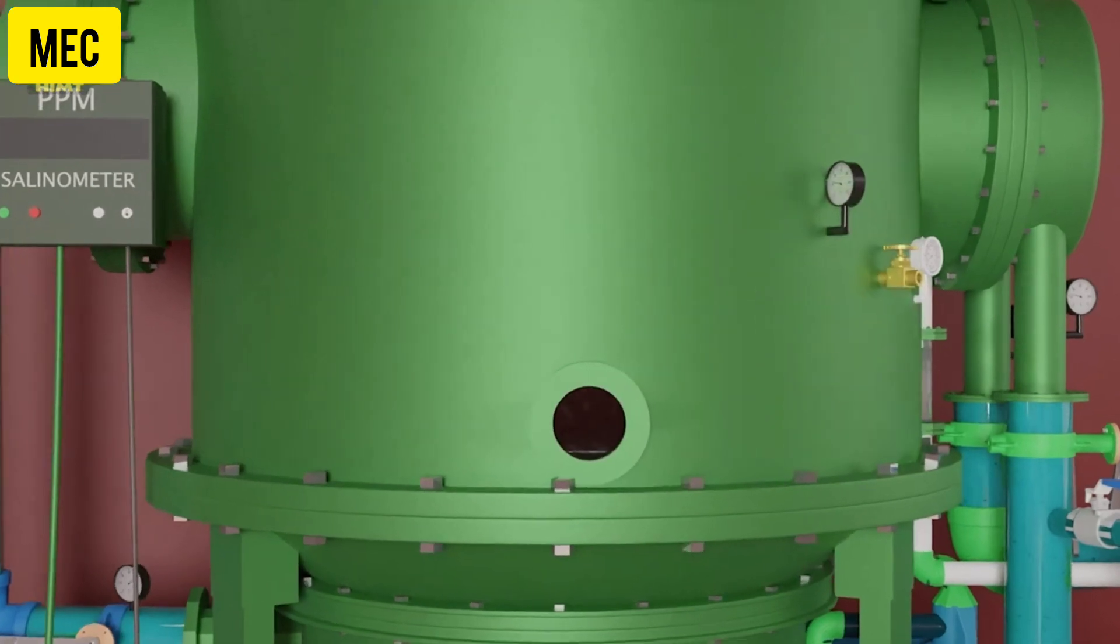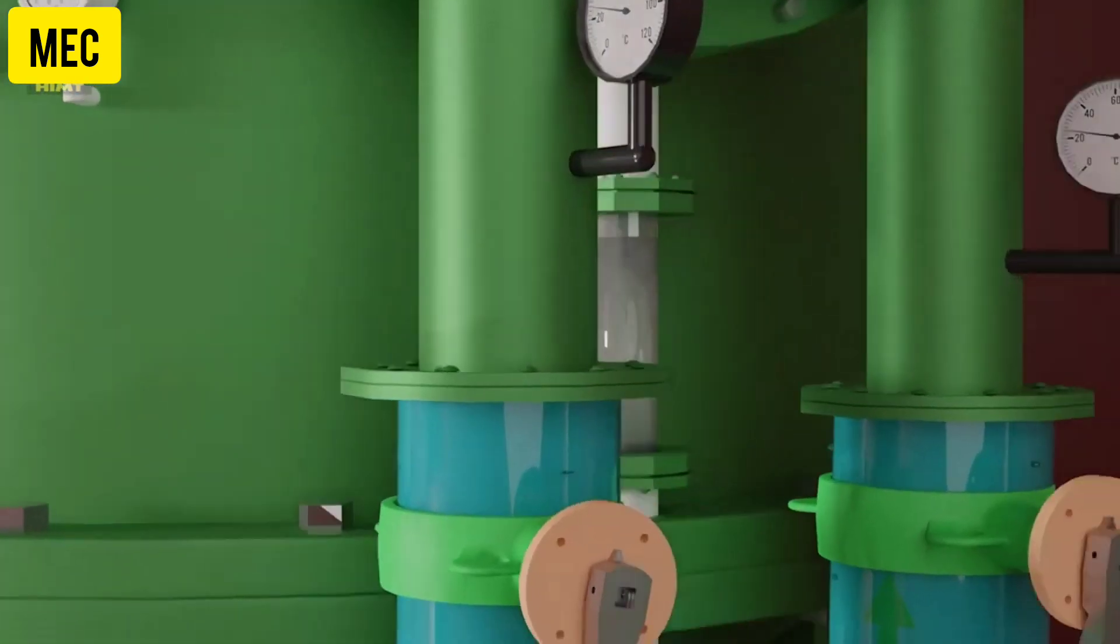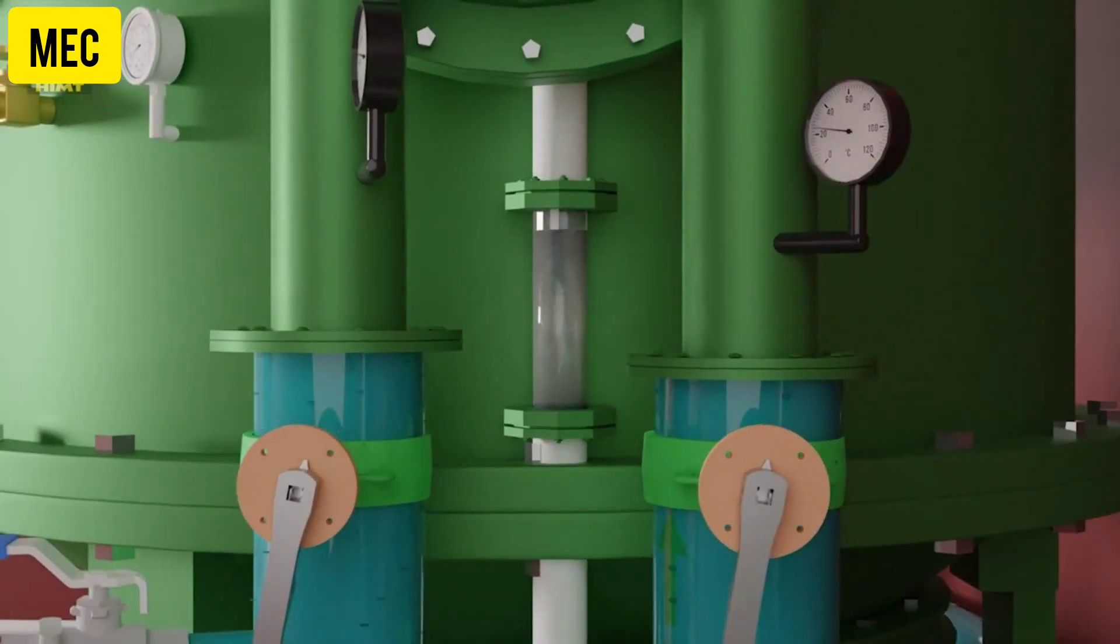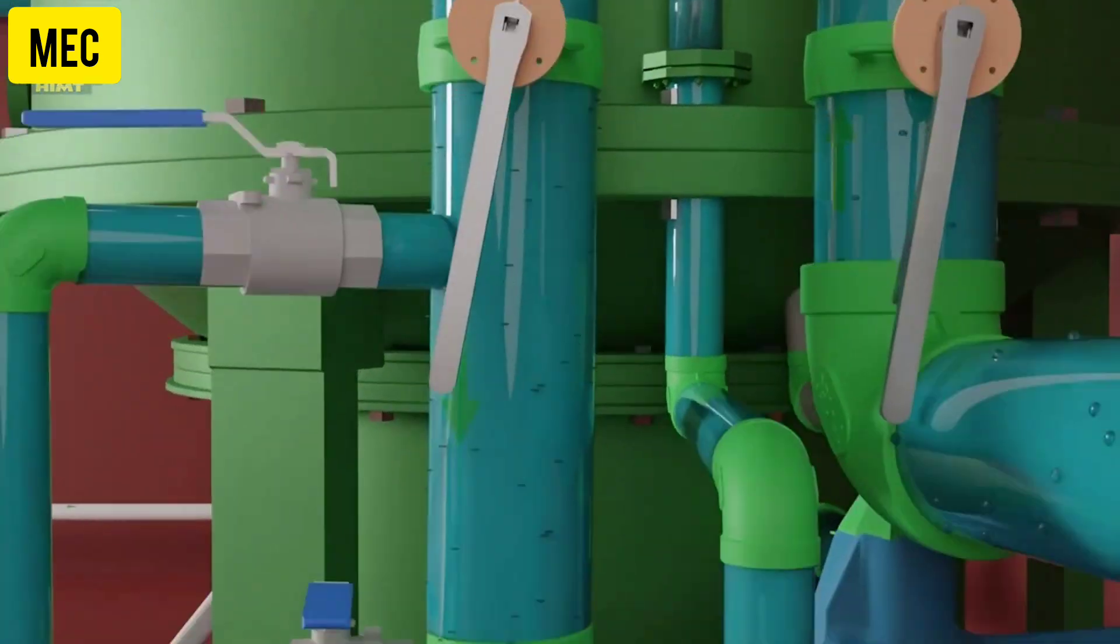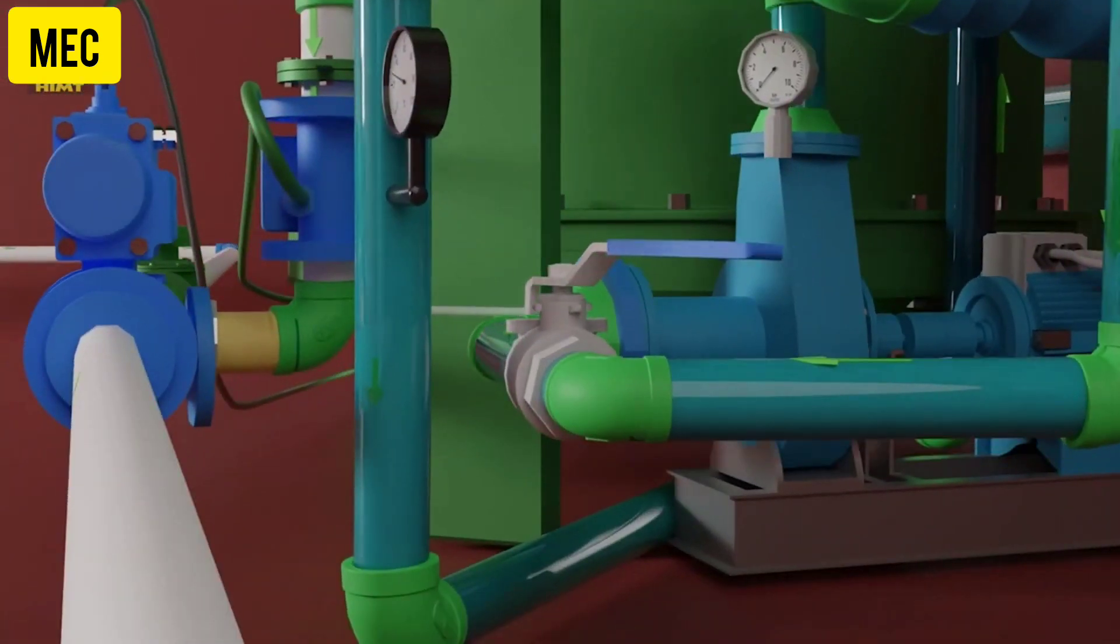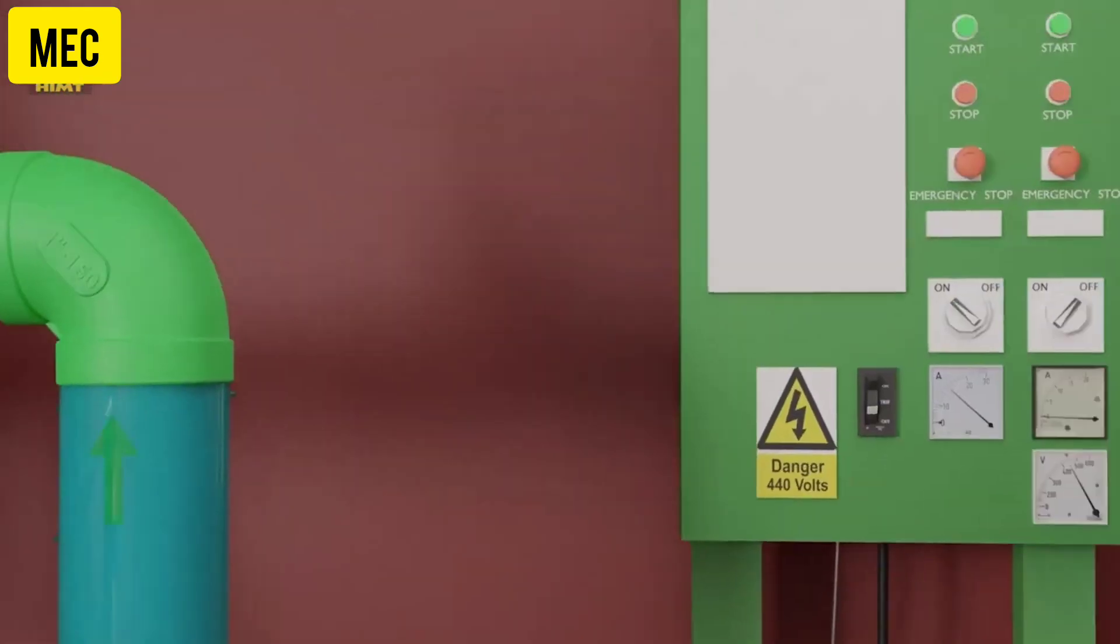As the steam comes in contact with the cooling water tubes, it gets condensed. When the sight glass in the distillate line is filled with the distillate, open the valves in the distillate line and start the distillate pump and monitor the ammeter reading.